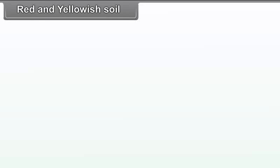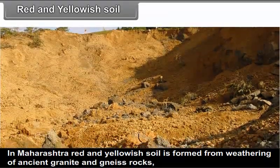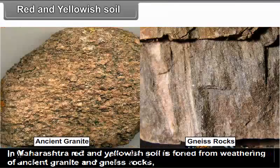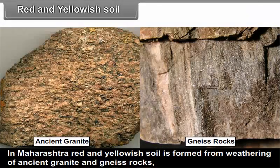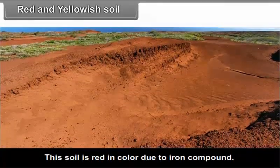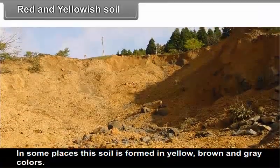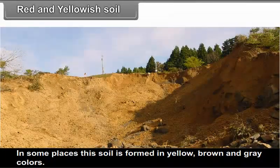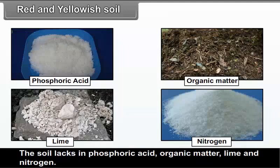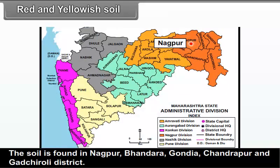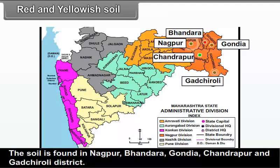Red and yellowish soil: In Maharashtra, red and yellowish soil is formed from weathering of ancient granite and gneiss rocks. This soil is red in color due to iron compounds. In some places, this soil is formed in yellow, brown and grey colors. The soil lacks phosphoric acid, organic matter, lime and nitrogen. This soil is found in Nagpur, Bhandara, Gondiya, Chandrapur and Gadchiroli districts. Crops like bajra, groundnut, potato and rice grow well in this soil.